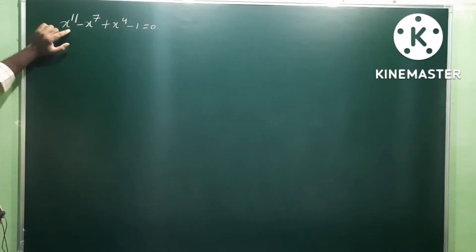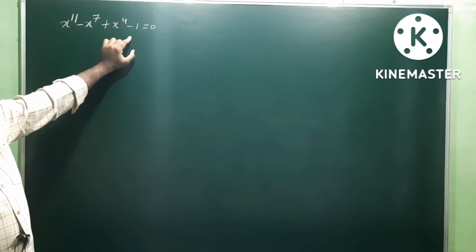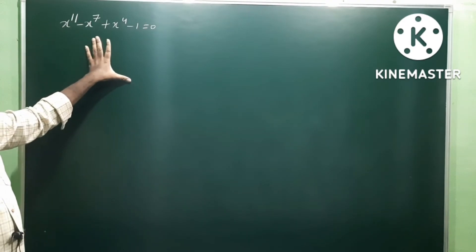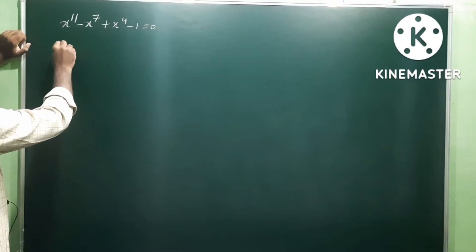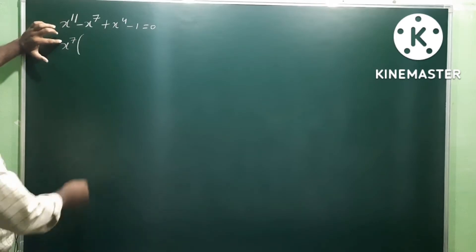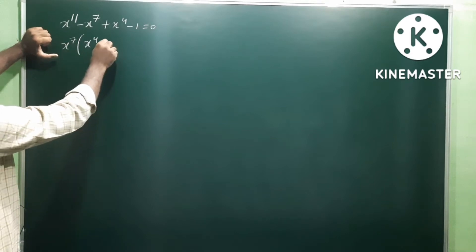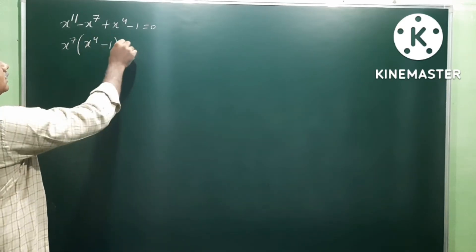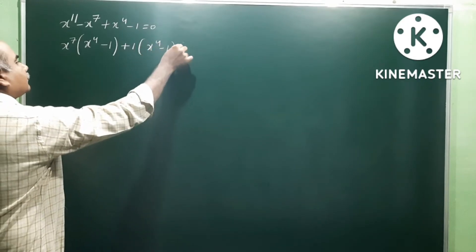Next problem: x power 11 minus x power 7 plus x power 4 minus 1 is equal to 0. We have to solve this equation and find the roots. Let us take x power 7 common from the first two terms — x power 11 minus x power 7 gives x power 7 into x power 4 minus 1 — and the remaining terms are x power 4 minus 1 equal to 0.